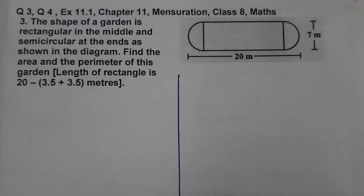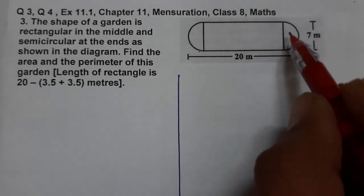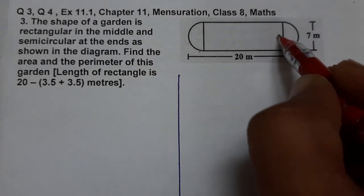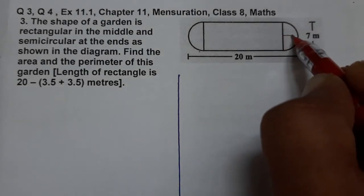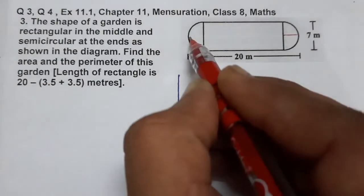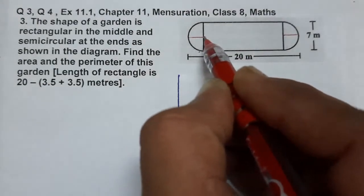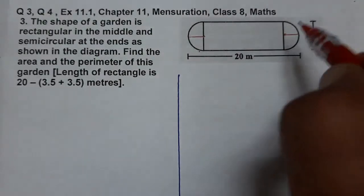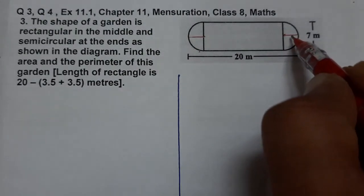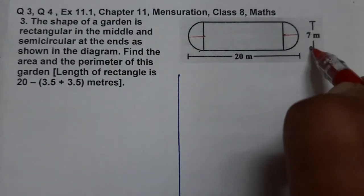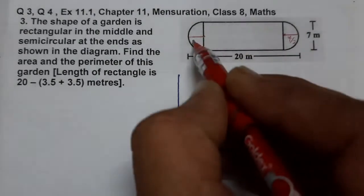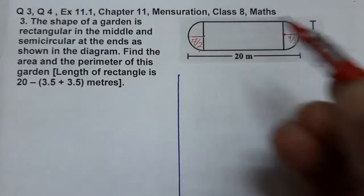Looking at the figure, the width is 7. Since each end is a semi-circle, 7 is the diameter. So the radius is 7 by 2. Both semi-circles on either side share this same radius of 7 by 2.